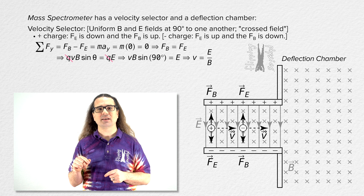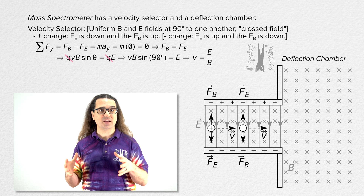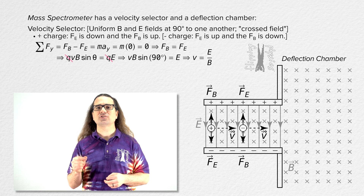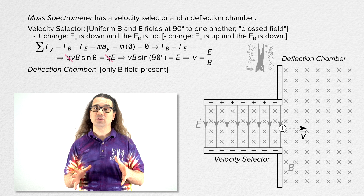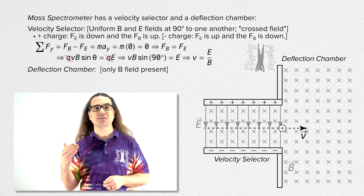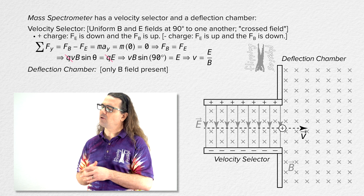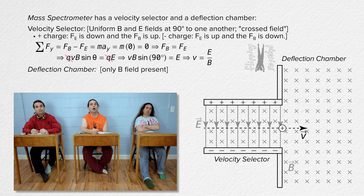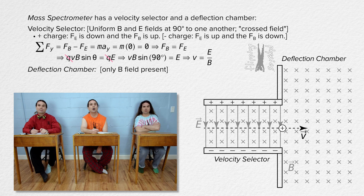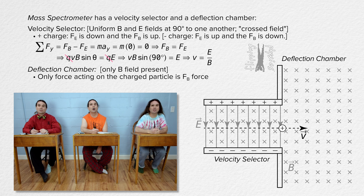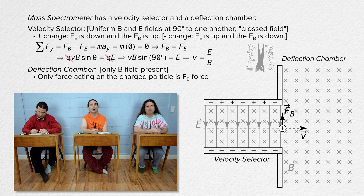After the velocity selector, the charges which are moving at a constant horizontal velocity enter the deflection chamber. The only field in the deflection chamber is the same magnetic field which is in the velocity selector. The only force acting on the charged particles will be the magnetic force. As the charges enter the deflection chamber, the magnetic force on a positive charge will be up and the magnetic force on a negative charge will be down.